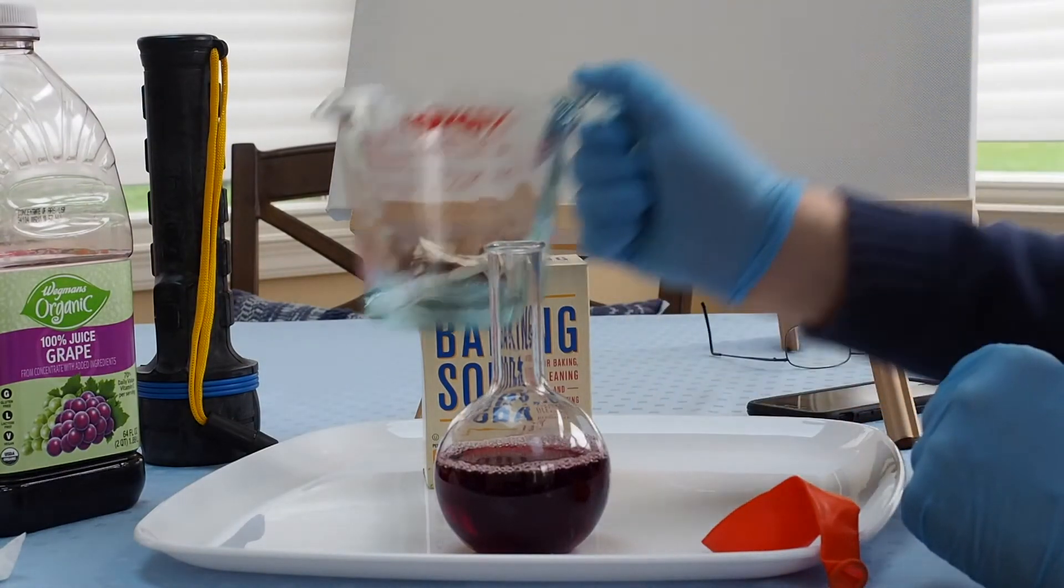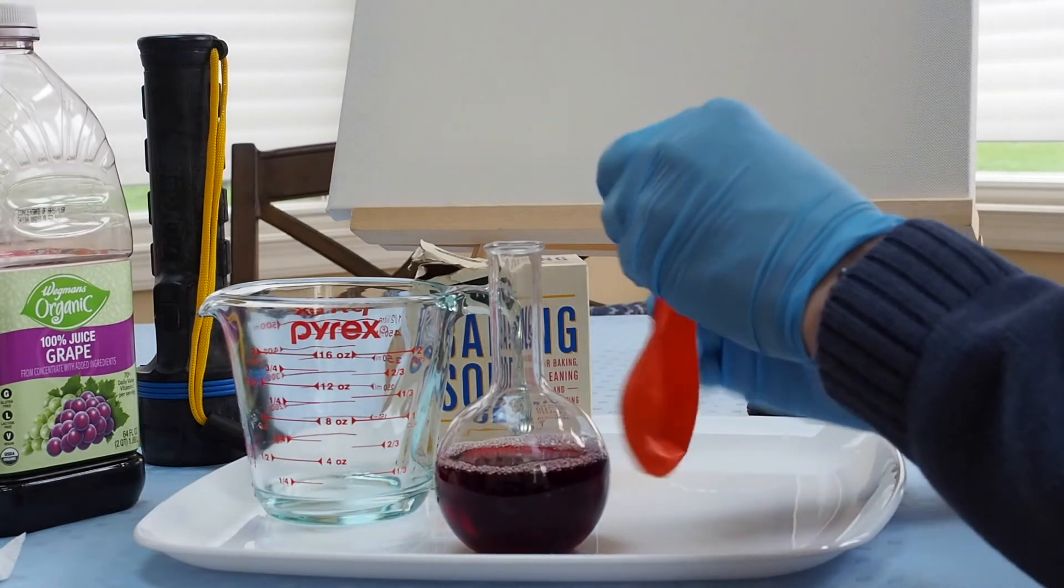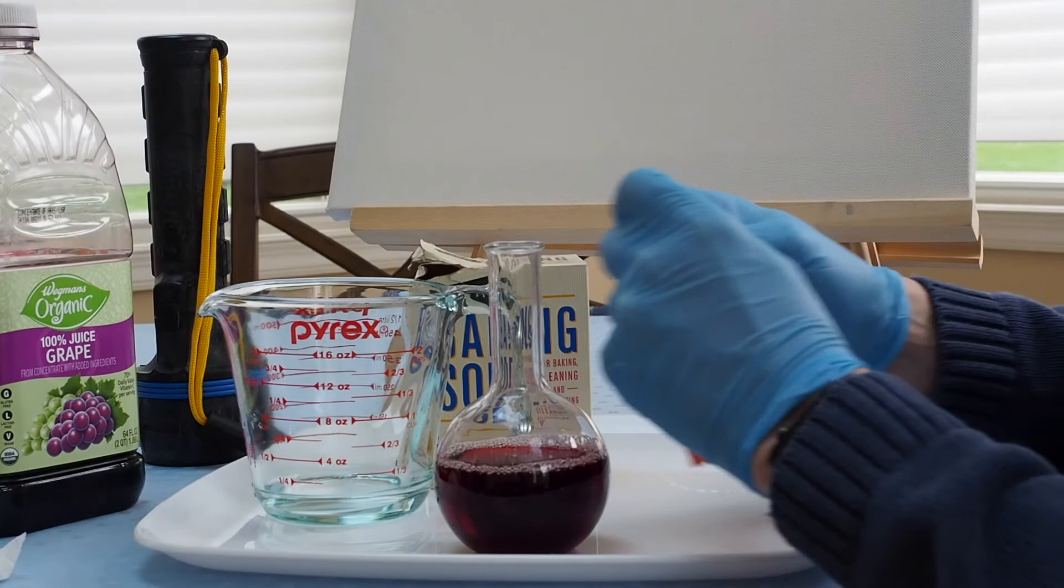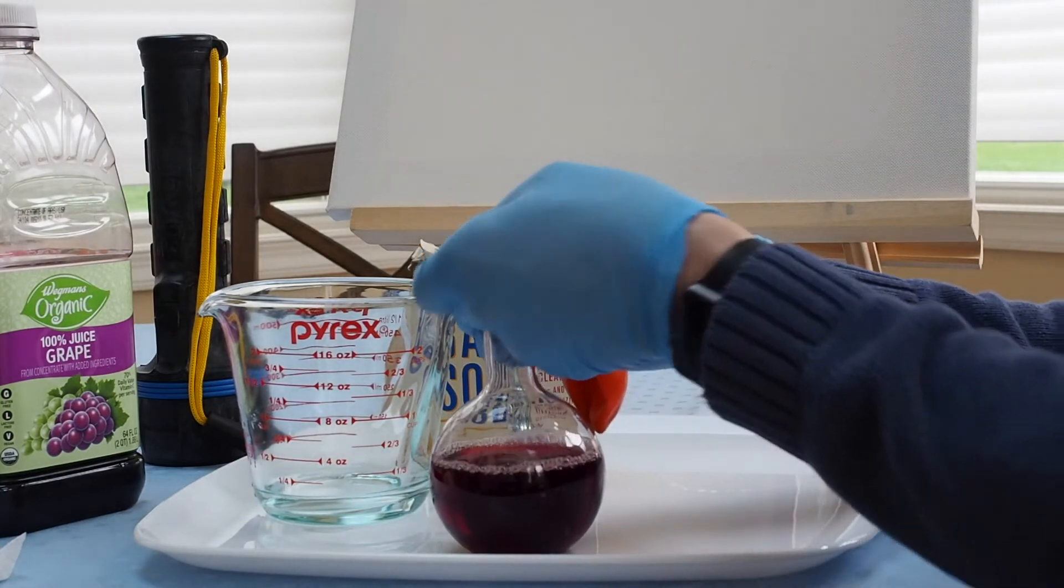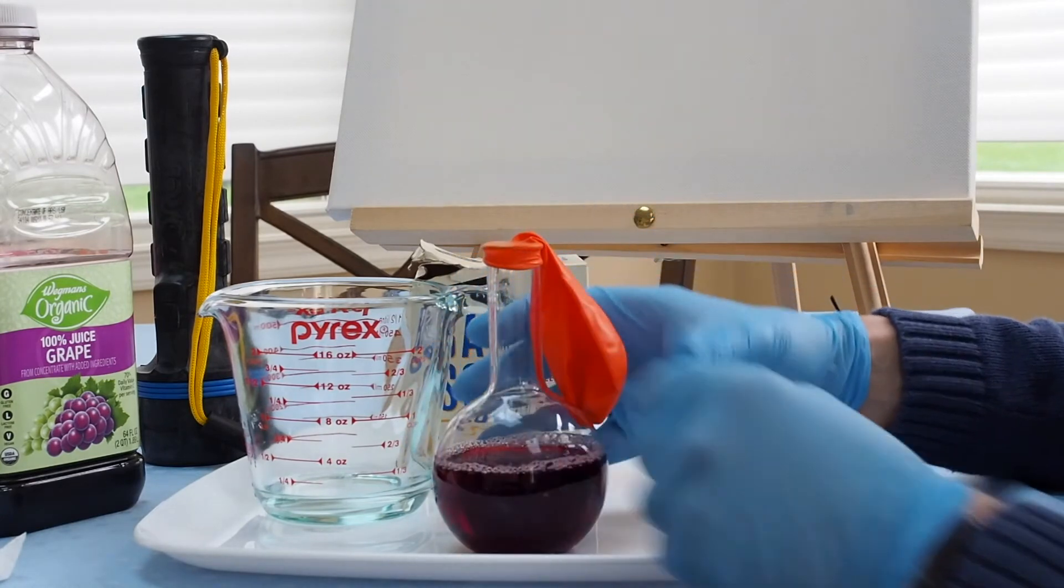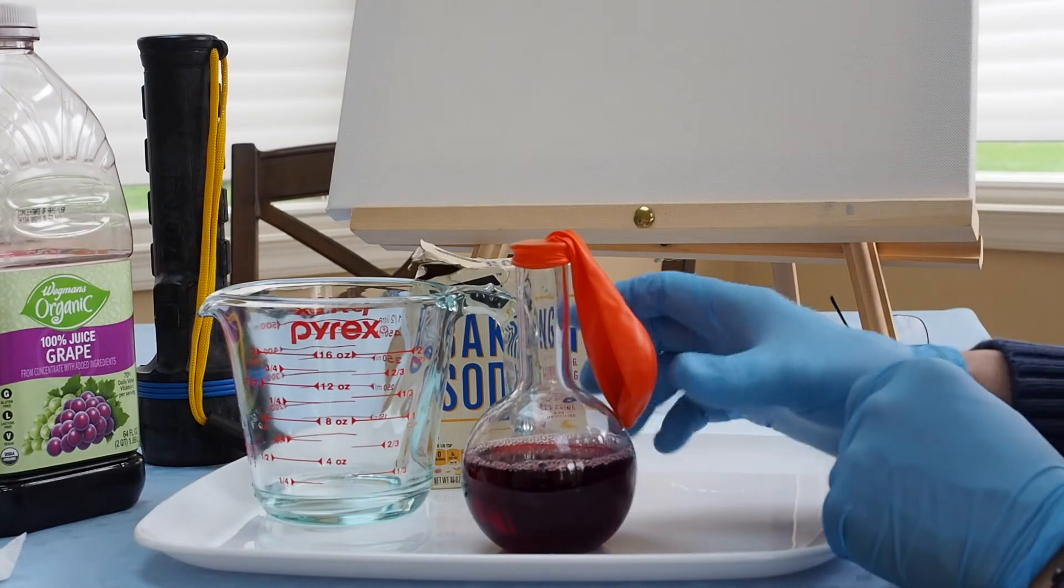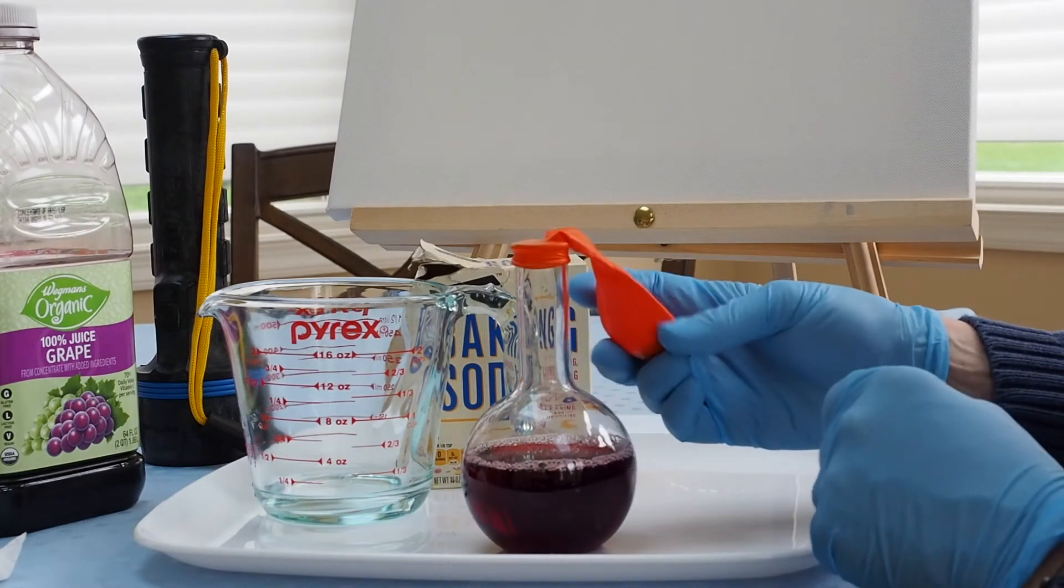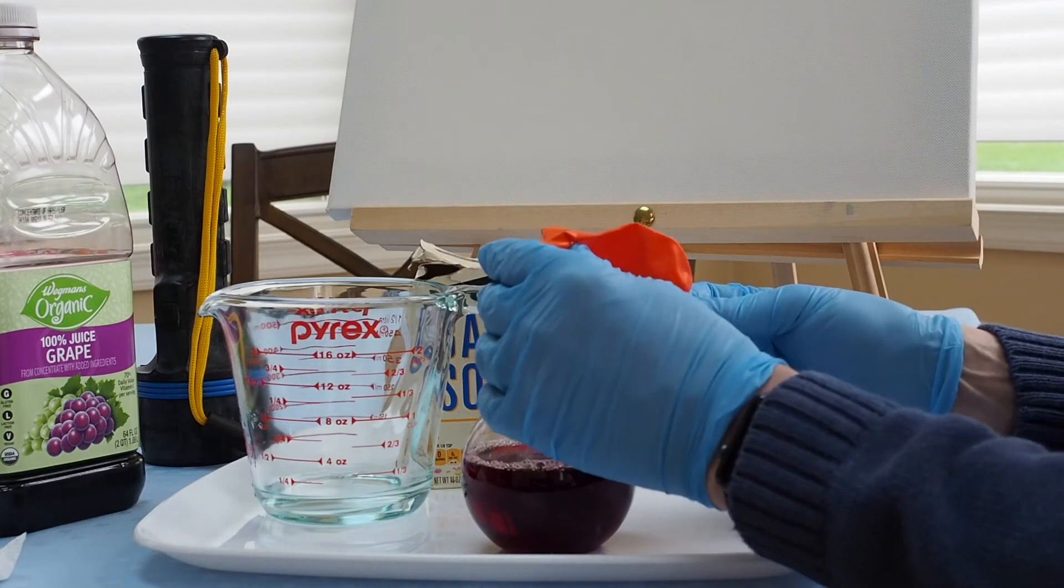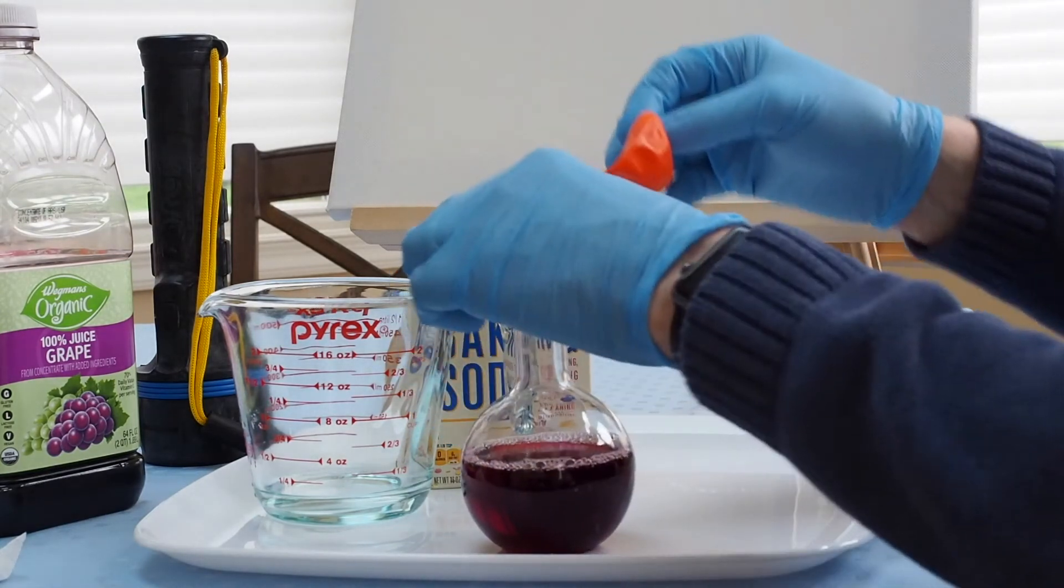Now we have another balloon with baking soda in it. So you would expect maybe the same thing as you saw before with the grape juice. But this time, it may be a little different. So here we go. We're going to add the baking soda to the grape juice vinegar mix.